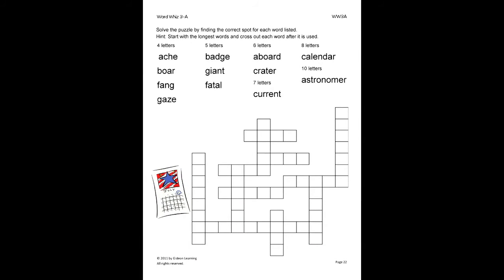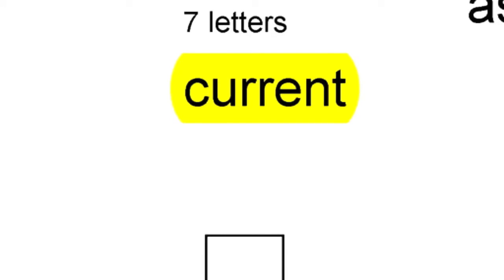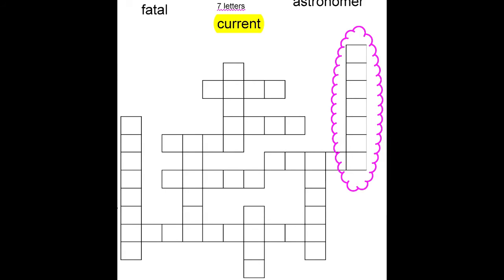On this activity, the student will solve the puzzle by finding the correct spot for each word listed. It is best to start with the longest words and cross out each word as it is used. Let's do the word current. We see that this is the only word that has seven letters. So we will find which spot in the puzzle that has seven spaces and then neatly write current in the spaces provided.